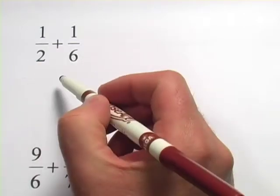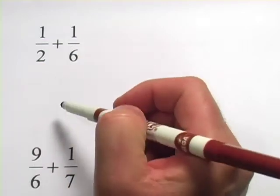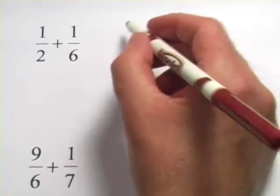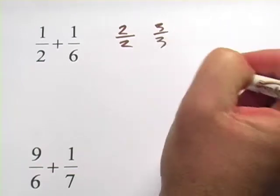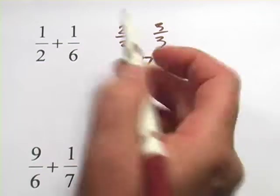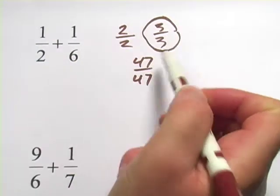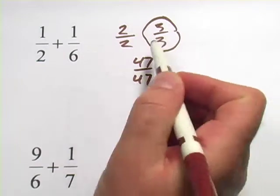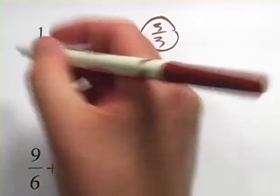The first step, getting the common denominators, usually requires multiplying one or both of the fractions by some version of 1. And remember, 1 is any number divided by itself. So all of these are versions of 1. In this case, we're going to multiply 1 half by this version of 1. And when you multiply something by 1, it stays the same. So what we end up with is just another version of 1 half. We're not really changing the value of this.